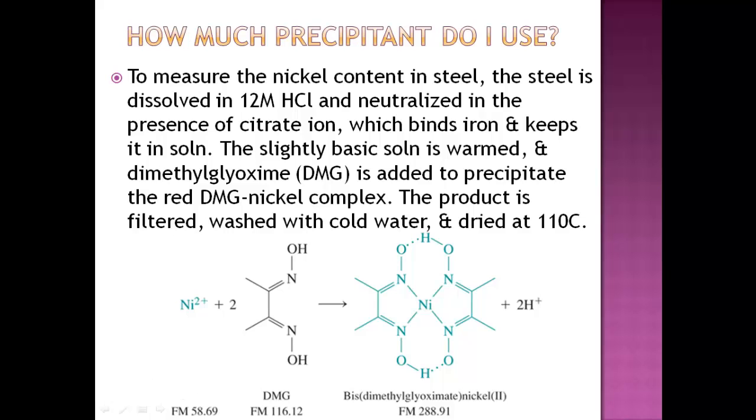Now, I want to do a little bit more complicated problem. Complicated in the sense that they're going to give you a lot of information, and you need to figure out what you need and how to get to the answer. This is on page 157 of your book. To measure the nickel content in steel, the steel is dissolved in 12 molar HCl and neutralized in the presence of citrate ion, which binds the iron and keeps it in solution. They bind the iron out of the solution so that the nickel that's left is in solution, and you can use it. They take out or they bind what they don't want so that they can analyze what they do want.